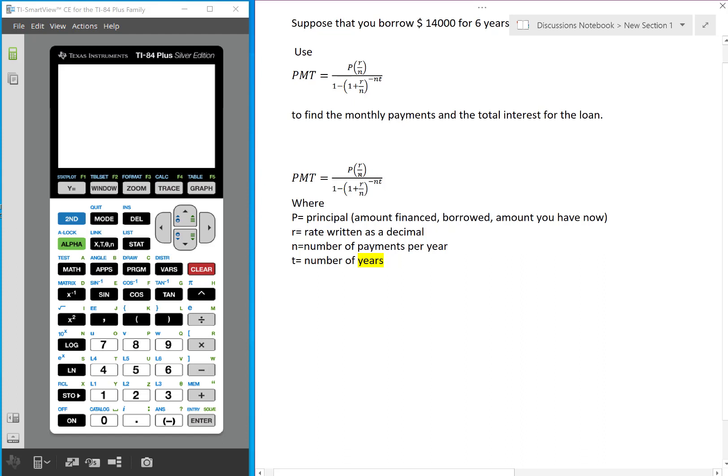P stands for principal, which is the amount financed or borrowed or the amount you have now. R stands for rate and it has to be written as a decimal.